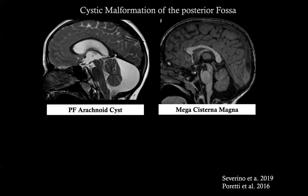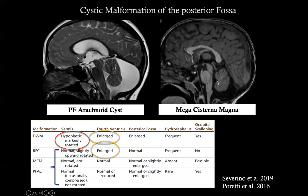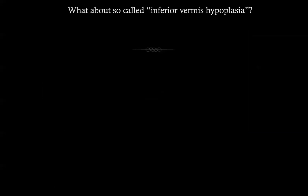To recap, we have Dandy-Walker malformation, Blake Pouch cyst, arachnoid cyst, and mega cisterna magna as the main cystic malformations. When evaluating a cystic malformation of the posterior fossa, first look at the vermis. If it is hypoplastic and markedly rotated, this is Dandy-Walker. The others all have a normal vermis. In Blake Pouch cyst and Dandy-Walker, the fourth ventricle is enlarged; the posterior fossa may be enlarged in Dandy-Walker but this is less critical.